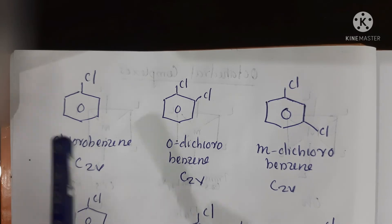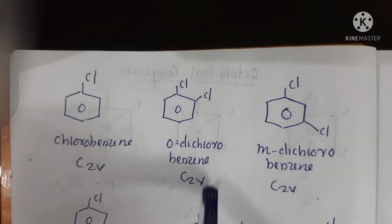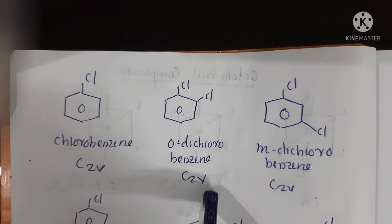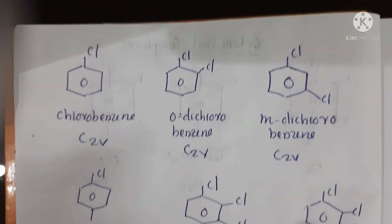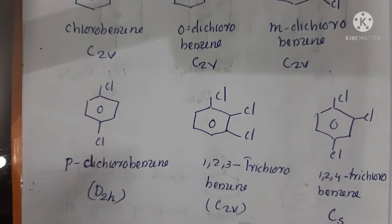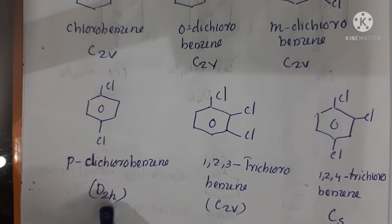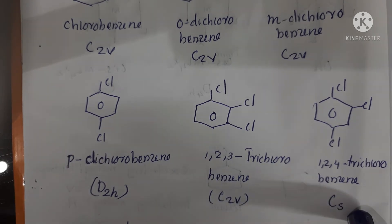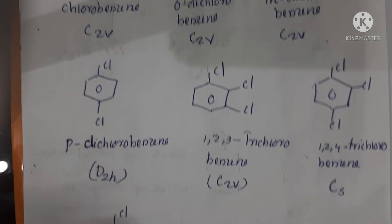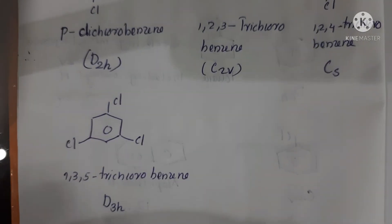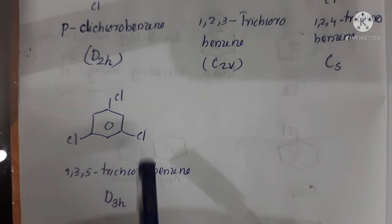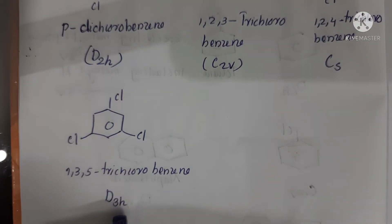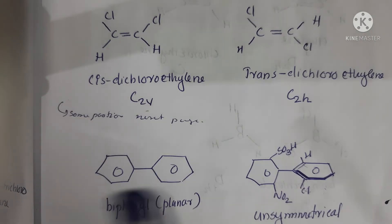For dichlorobenzene isomers: ortho-dichlorobenzene and meta-dichlorobenzene are C2V, para-dichlorobenzene is D2H. For trichlorobenzene isomers: 1,2,3-trichlorobenzene is C2V, 1,2,4-trichlorobenzene is Cs, and 1,3,5-trichlorobenzene is D3H.